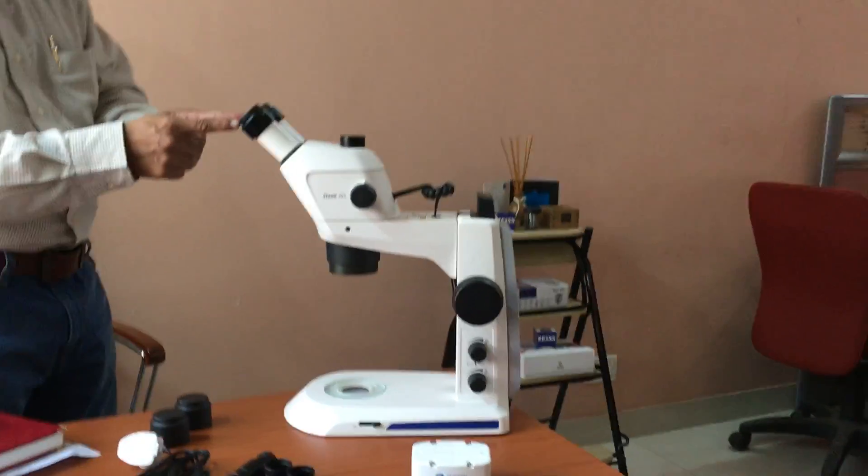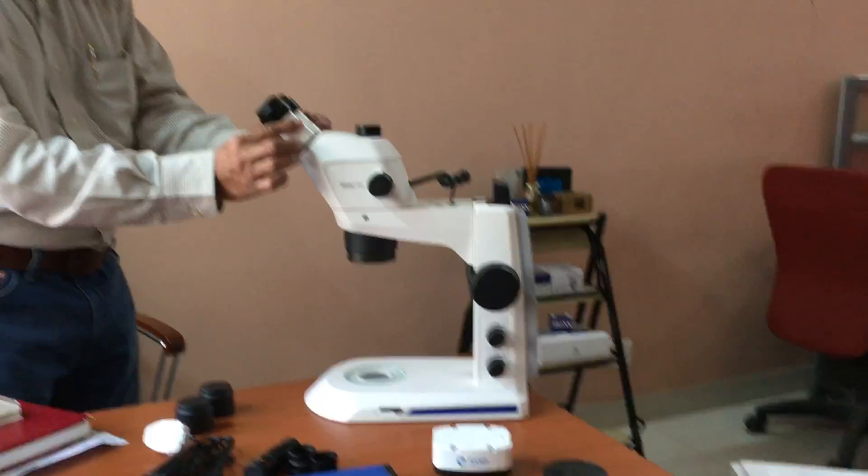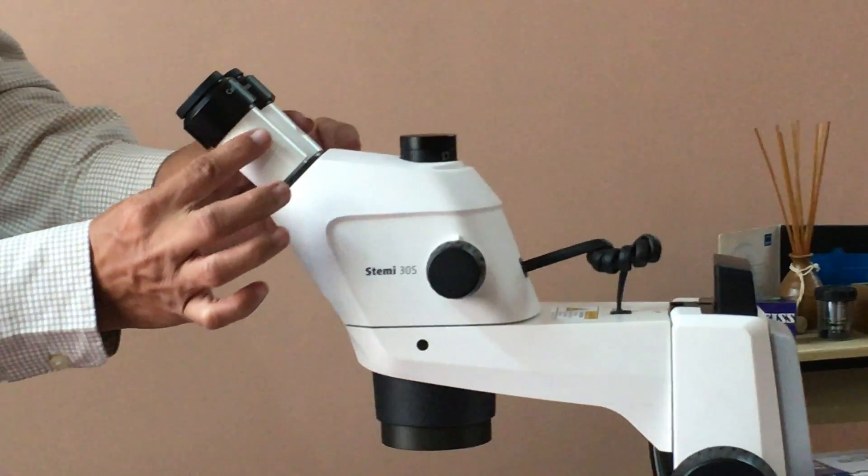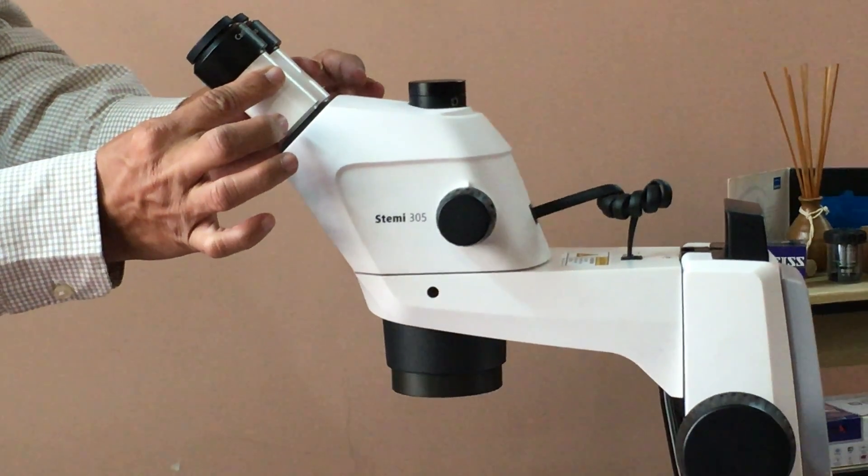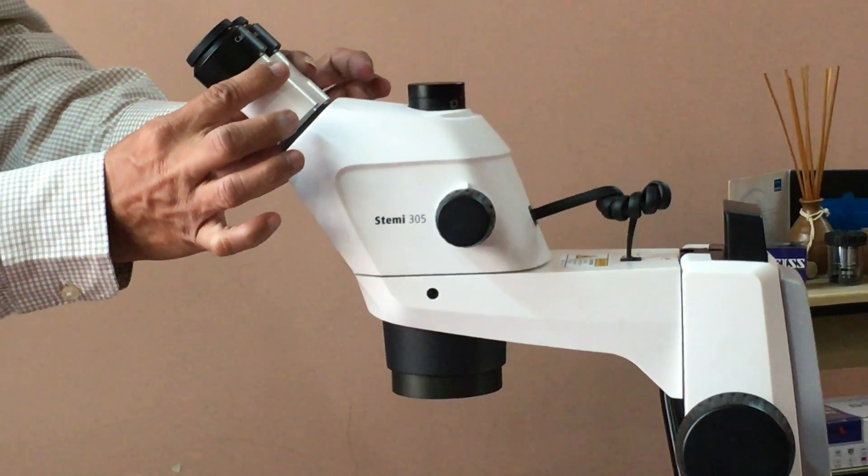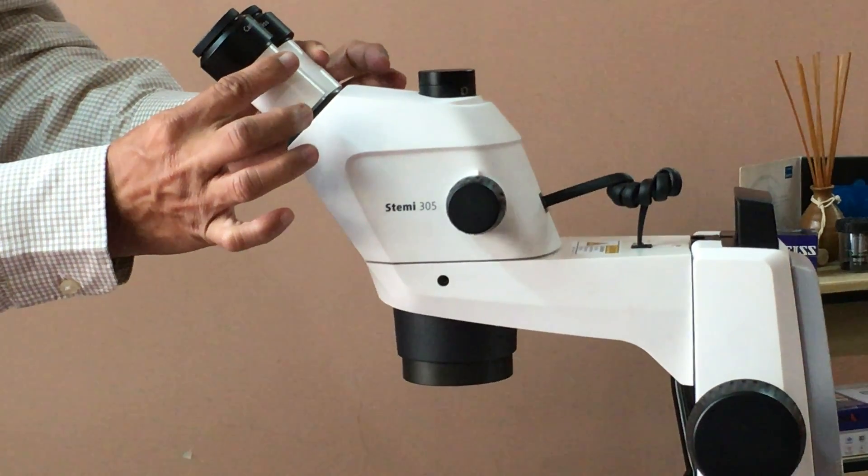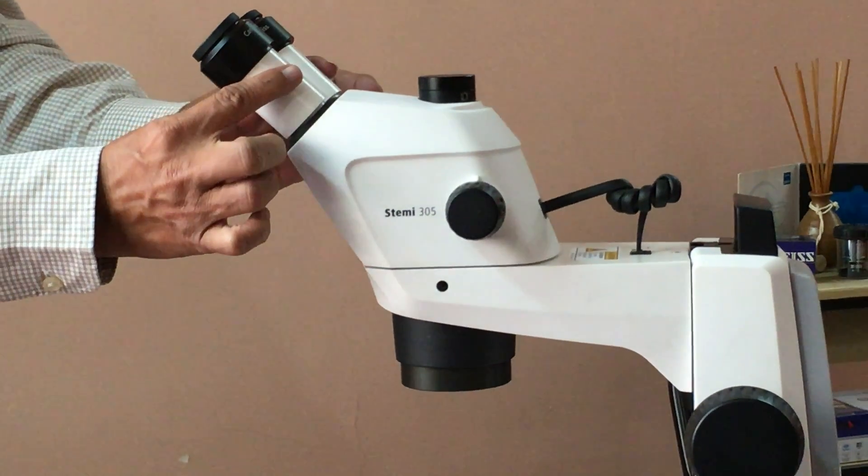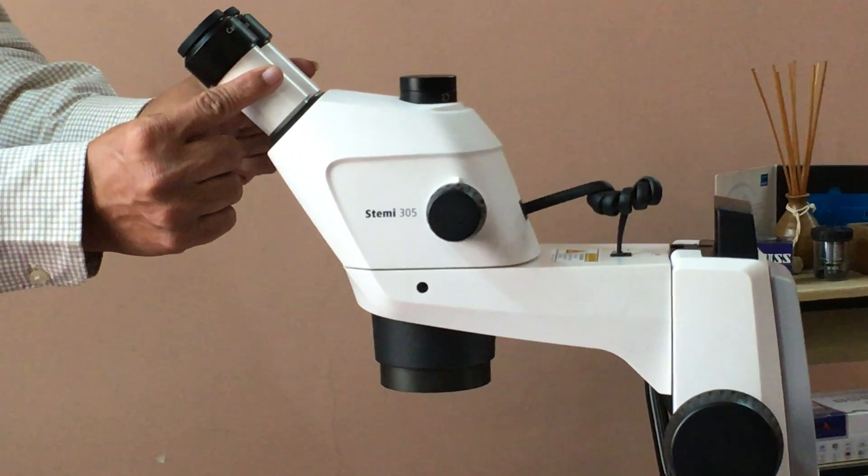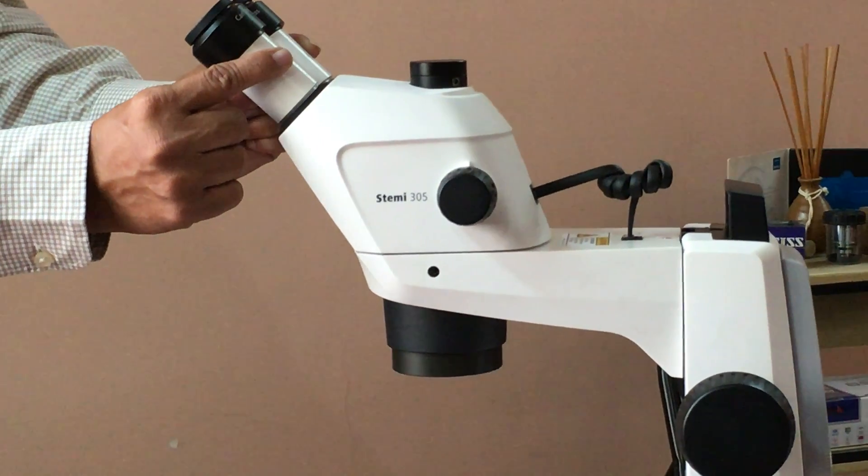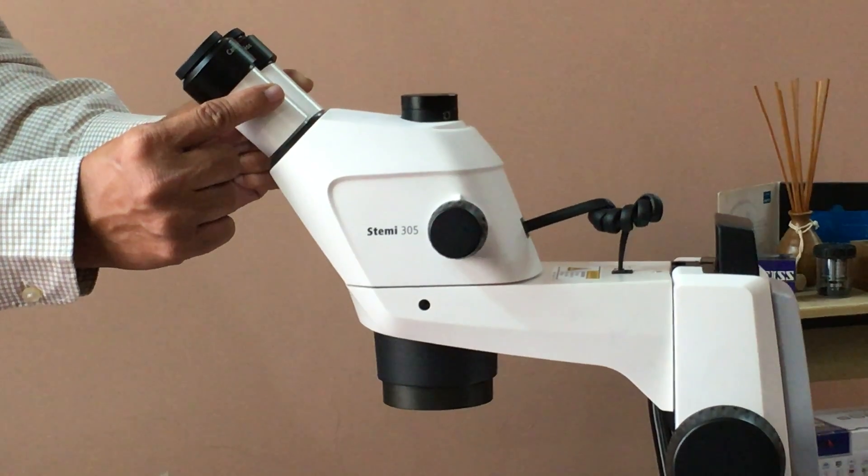The interpupillary distance of the eyepieces can be changed by holding at this wide point. Either close the eyepiece pair or widen the eyepiece. Avoid holding at this point, always hold it at the wide point. This is how you can change the interpupillary distance of the eyepiece.